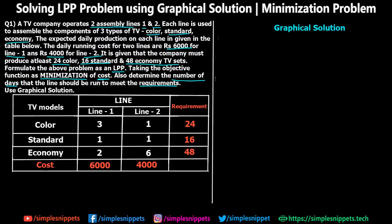Every day the TV company keeps running line 1 and line 2, incurring a daily loss of 6,000 and 4,000 rupees respectively. If line 1 runs for 2 days that's 12,000 rupees; if line 2 runs for 2 days that's 8,000 rupees. The requirement is 24 color TVs, 16 standard TVs, and 48 economy TVs. Line 1 can make 3 color TVs, 1 standard TV, and 2 economy TVs in one day.